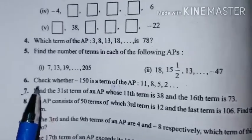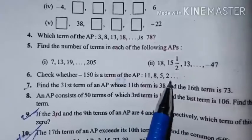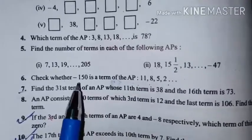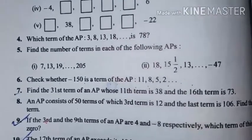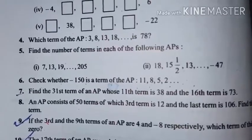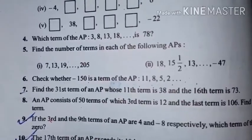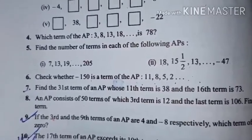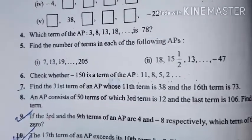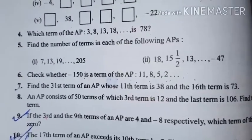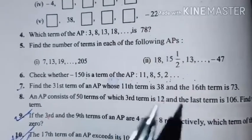Question number 6 is: check whether minus 150 is a term of the AP. In this question, we have to check if minus 150 will come in this AP or not. To check: if the value of N is a positive whole number, it means minus 150will come in this AP. If N is negative or a fractional value, it means minus 150 will not come in this AP.